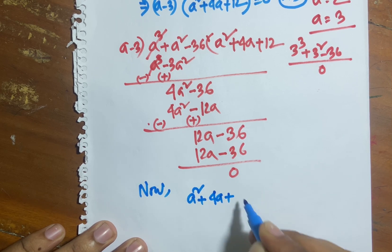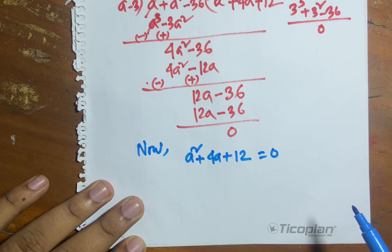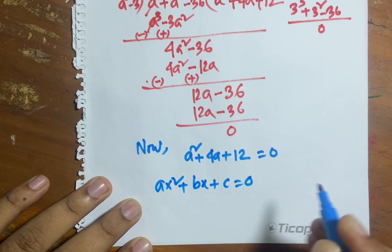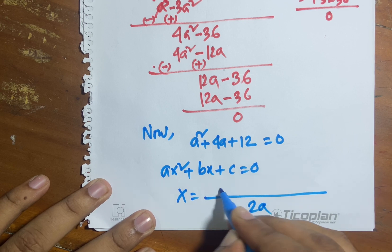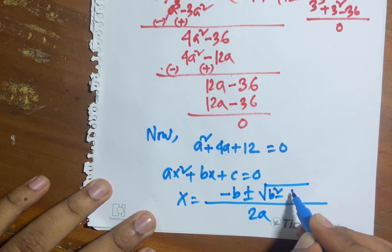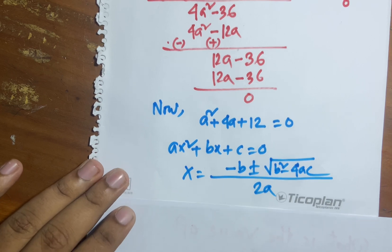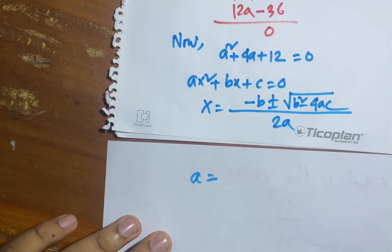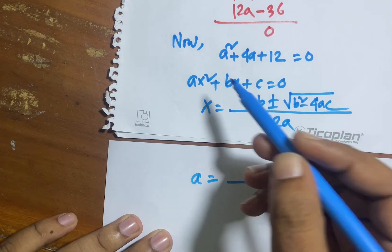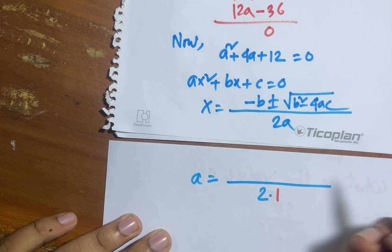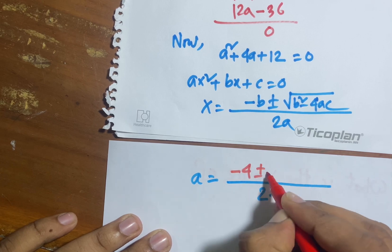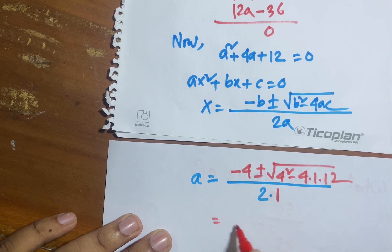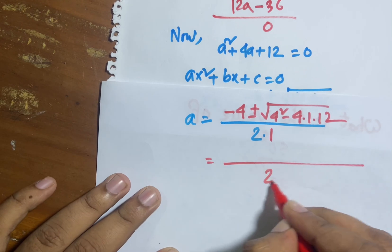What is the value of a from a squared plus 4a plus 12 equals 0? I compare with the standard form ax squared plus bx plus c equals 0, where x equals minus b plus or minus root over b squared minus 4ac, all over 2a. Comparing: a equals 1, b equals 4, c equals 12. So x equals minus 4 plus or minus root over 4 squared minus 4 times 1 times 12, over 2 times 1.